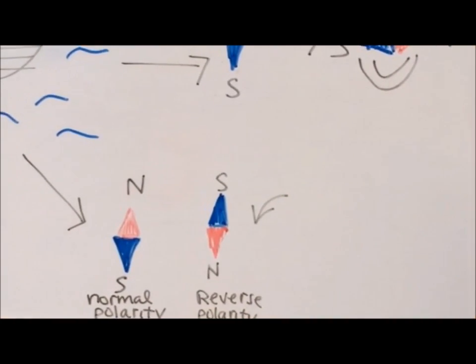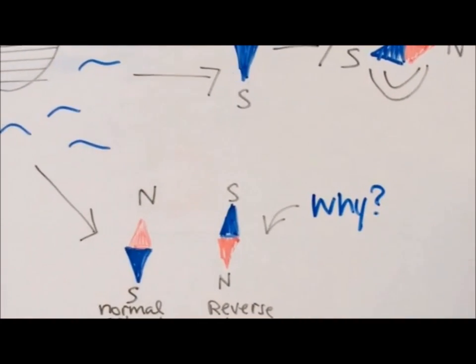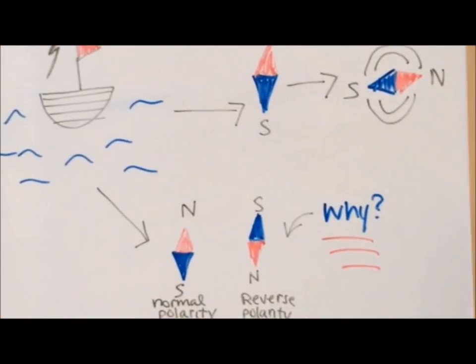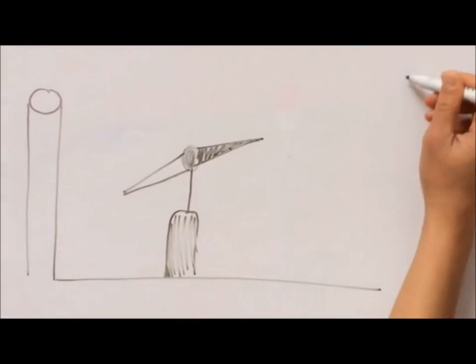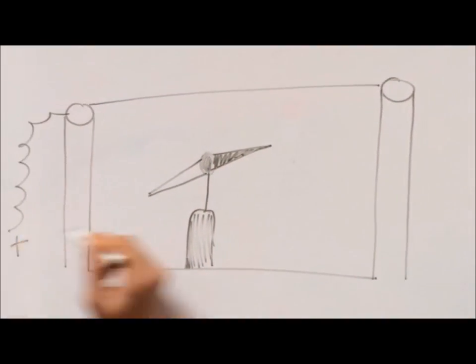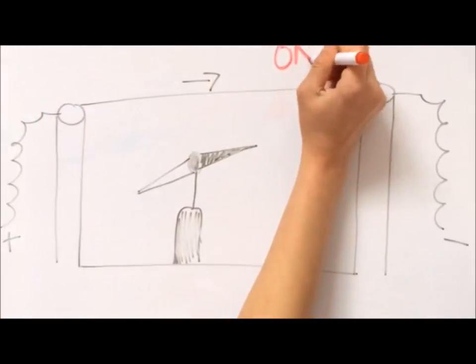Scientists, including Orsted, didn't understand why this happened, which became the reason he began to research electricity. In the experiment, Orsted placed the wire parallel to and directly above the compass needle. When the current of the battery was turned on, the compass needle turned.